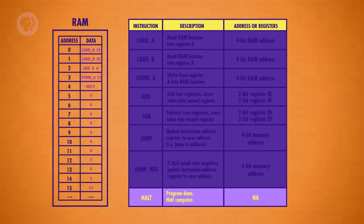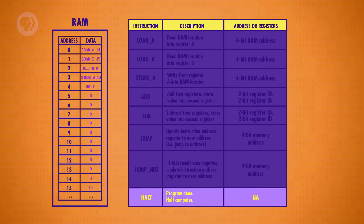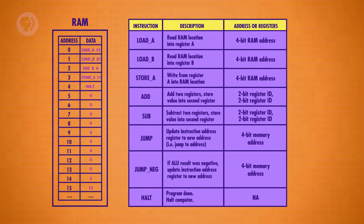Our previous program really should have had a halt instruction. Otherwise, the CPU would have just continued on after the store instruction, processing all those zeros. But there is no instruction with an opcode of zero, and so the computer would have crashed. It's important to point out that we're storing both instructions and data in the same memory — there is no fundamental difference, it's all just binary numbers. So the halt instruction is really important, because it allows us to separate the two.